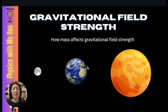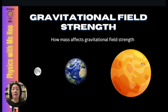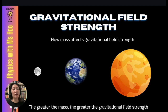Similarly, if we compare planet Earth against Jupiter, Jupiter has a much greater mass. Therefore, Jupiter will have much greater gravitational field strength. So the relationship between mass and gravitational field strength is: the greater the mass, the greater the gravitational field strength.